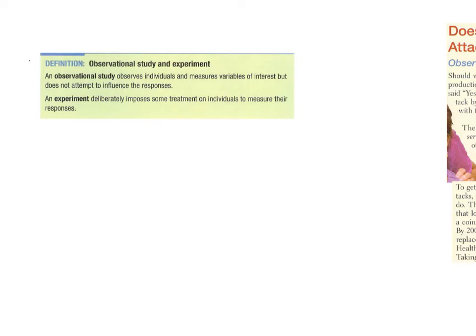In the second half of this chapter, we're going to be looking at experiments. The first thing we need to do is talk about the difference between an observational study versus an actual experiment. In an observational study, we're just observing individuals and measuring variables of interest, with no attempt to influence the responses.